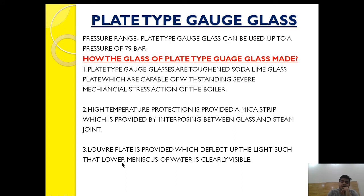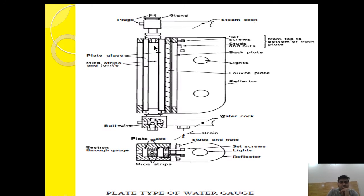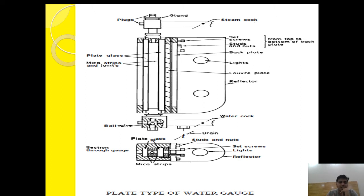The liver plate is provided to deflect light such that the lower meniscus of the water is clearly visible. As you can see, this is the front plate, this is the first plate, this is the second plate, and this is the lube plate. The lube plate helps to clearly indicate the lower meniscus of the water, indicating the correct water level from a distance. Its main advantage is that it deflects light in such a way that the lower meniscus of the water is indicated clearly from a distance, showing the clear water level.